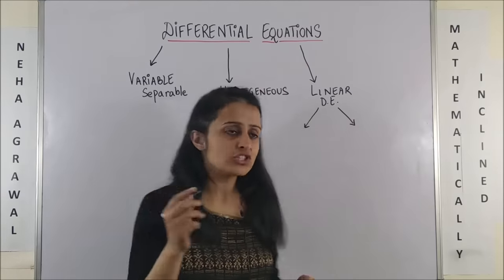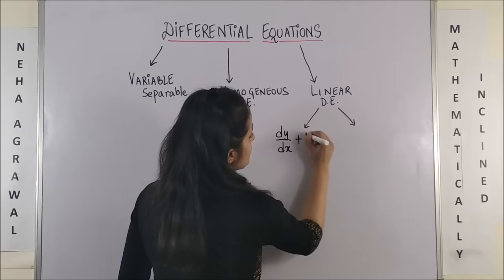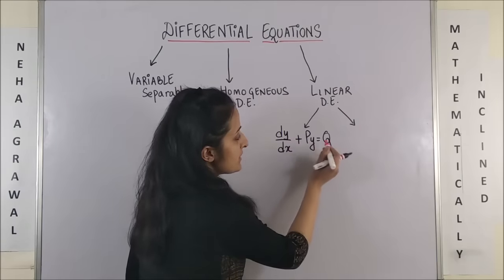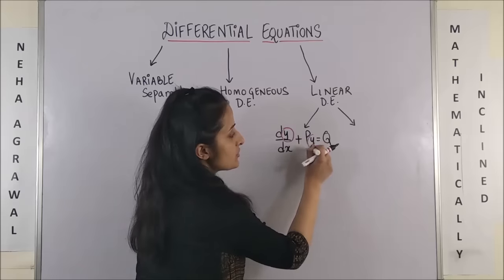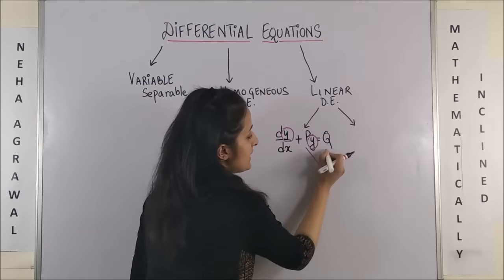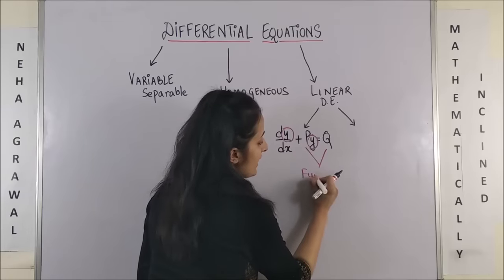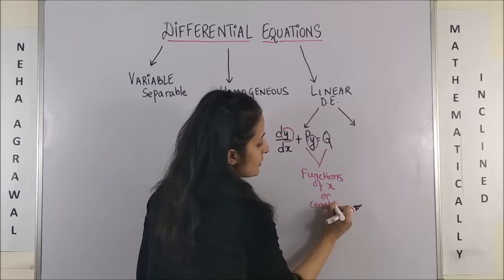Linear differential equation. Basically, there are only two forms. It will be dy by dx plus py is equal to q. So, basically if it's dy by dx, it should be y here, where p and q could be functions of x or constant terms.